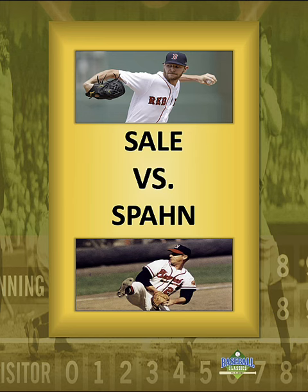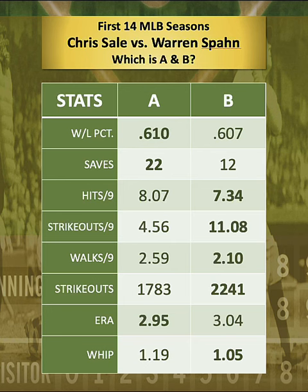It's Chris Sale versus Hall of Famer Warren Spahn. Look how close these two are. Based on the first 14 seasons of their illustrious careers, one belongs to stat column A, the other stat column B. Which is which?